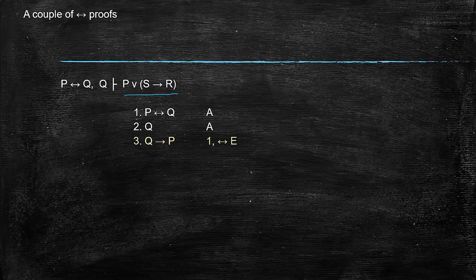So if Q then P by one and biconditional elimination. P by two and three conditional elimination. And then magic P or if S then R by four and or introduction.